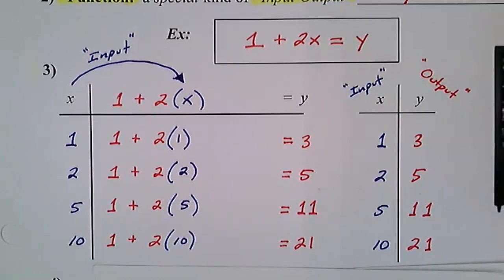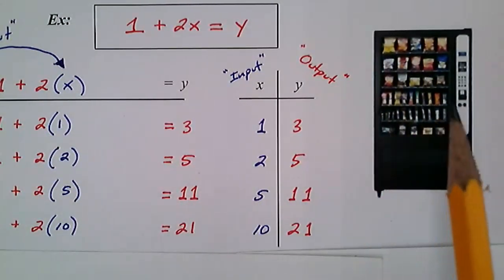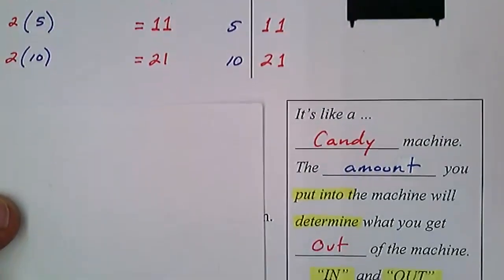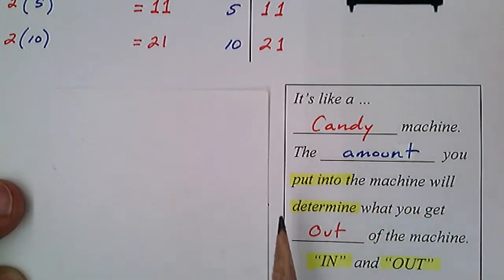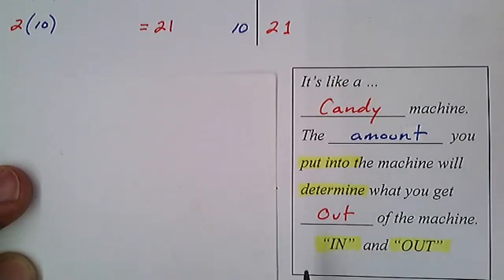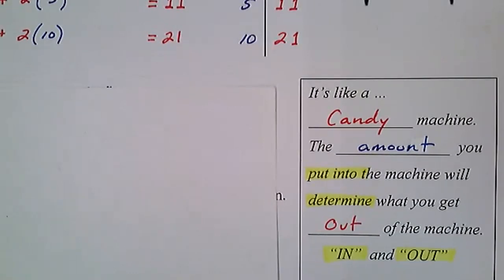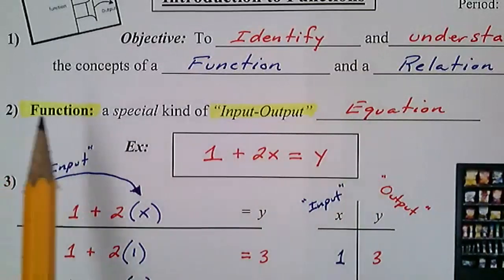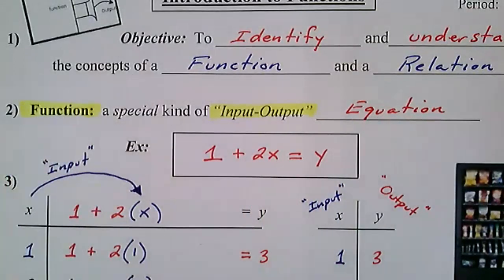I've also used the analogy of a candy machine. A candy machine — you have to put something in to get something out. A function is like a candy machine: the amount you put into the machine determines what you get out. You put something in, you get something out. The actual academic word for this input-output process is 'function,' so we're going to start using that word going forward.